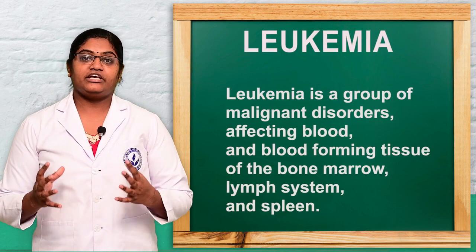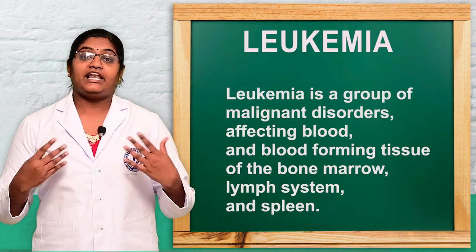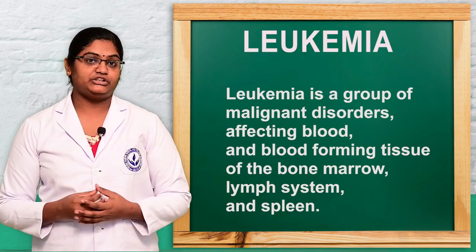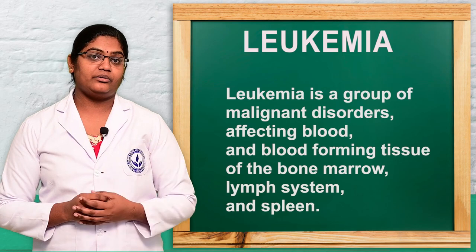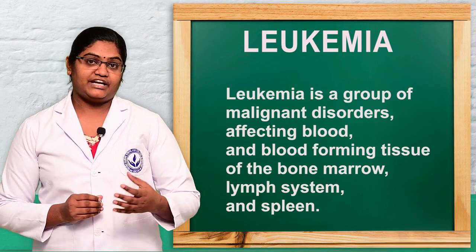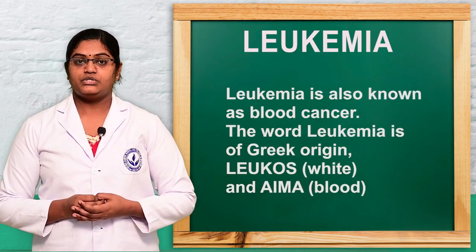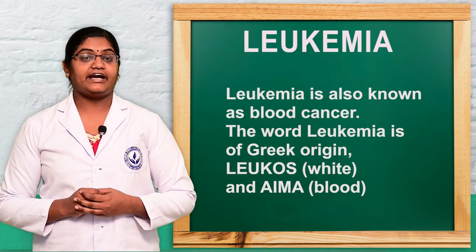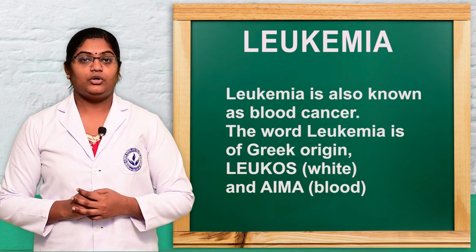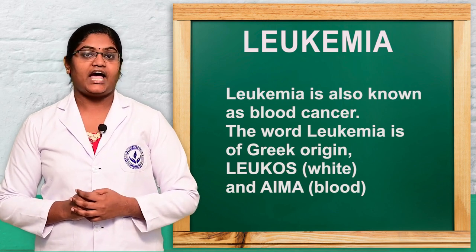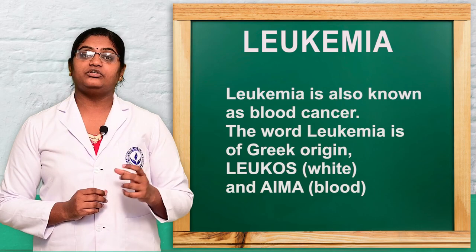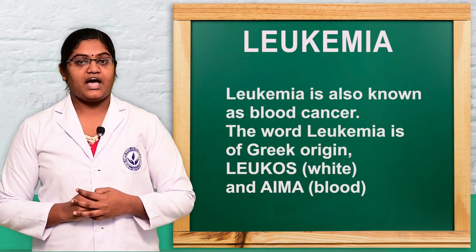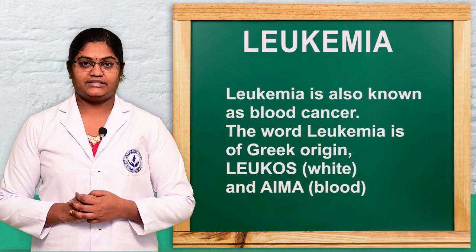Leukemia is the malignant disorder of blood and blood-forming tissues, bone marrow, lymphatic system, and spleen. The word leukemia is derived from the Greek words 'leukos,' which means white, and 'aima,' which means blood.